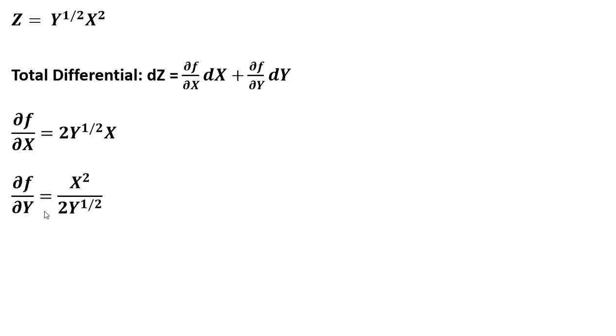And then we take another partial derivative, this time with respect to y. So bringing the 1 half down in front, that's why we've got this 1 half here divided by 2. And then y, we're going to have 1 half minus 1 in the exponent. So we've got y to the minus 1 half power. Following the rules of exponents, y to the minus 1 half power is just 1 over y to the 1 half.